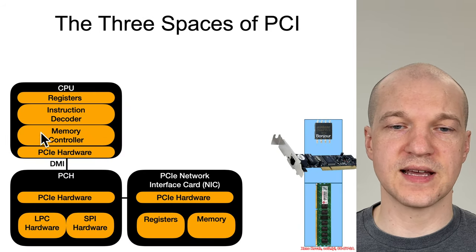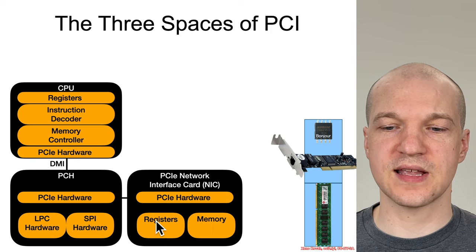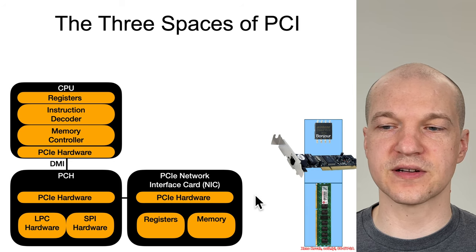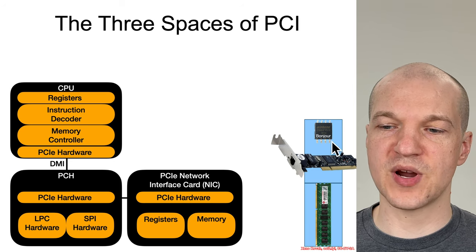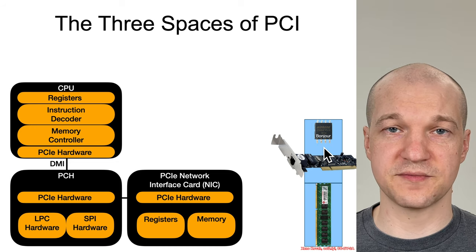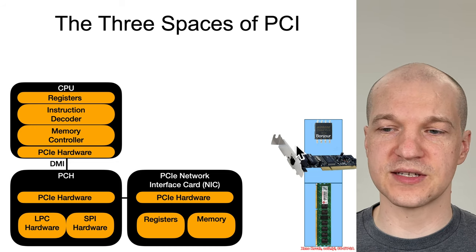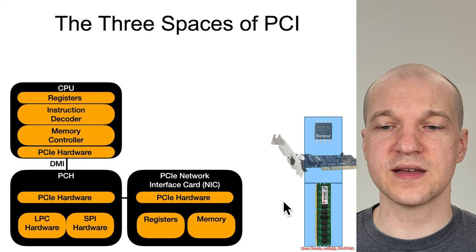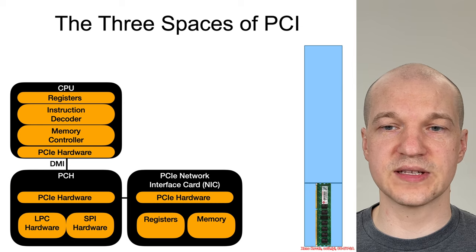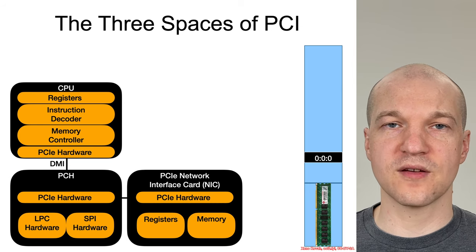We had these diagrams before: CPUs, PCHs, and then a peripheral connected via PCIe, such as a network interface card. We saw that these were in some memory-mapped IO space that was stealing some physical address range, and therefore you couldn't get to the RAM at that address range — you would just talk to some particular peripheral.